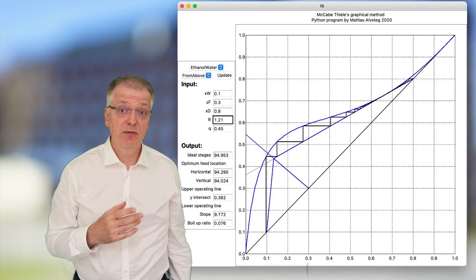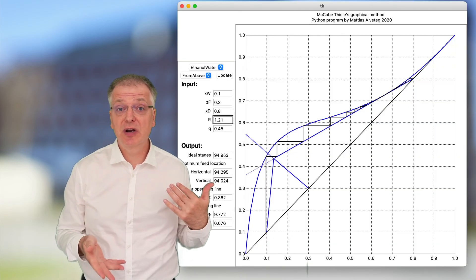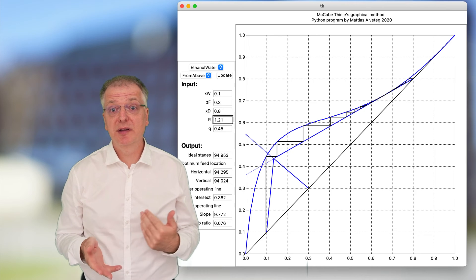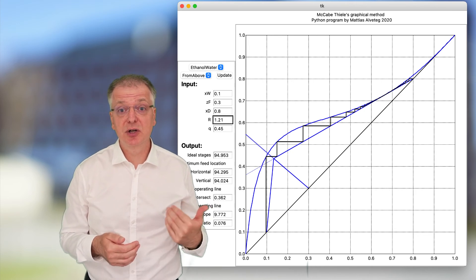I do suspect that one reason why some students get confused and try to count the number of triangles in the graph where, for example, the upper operating line is a tangent to the system curve